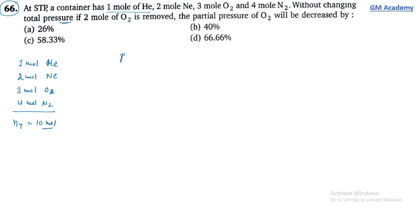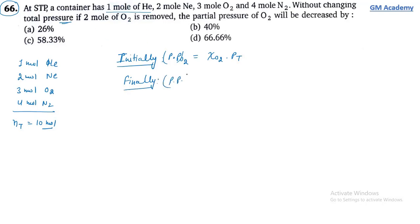Initial partial pressure of O₂ = (3/10) × P_total. After removing 2 mol O₂: O₂ remaining = 1 mol, total moles = 8. Final partial pressure of O₂ = (1/8) × P_total.